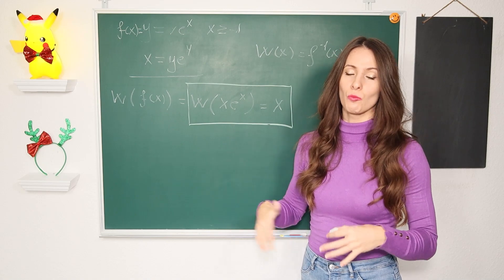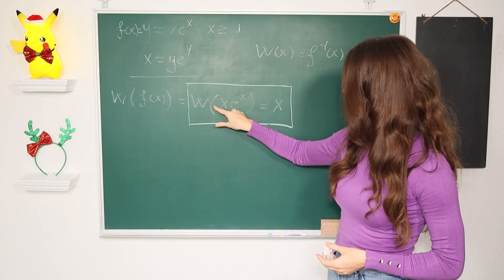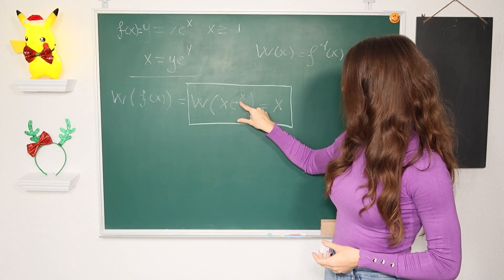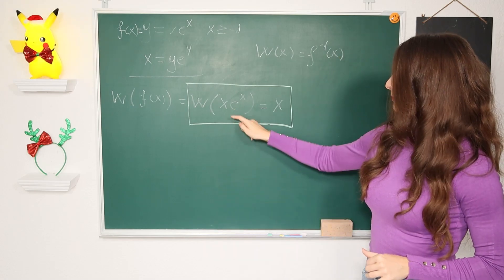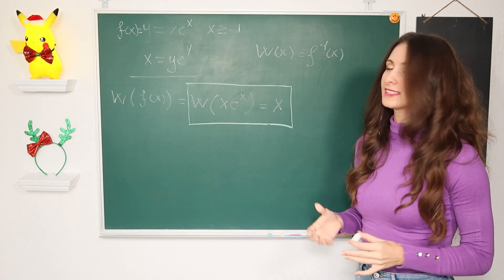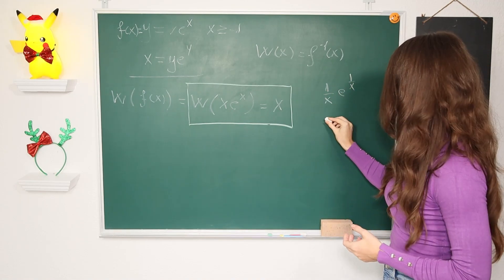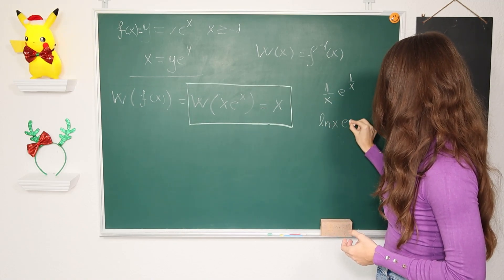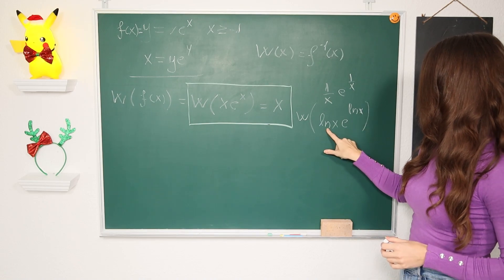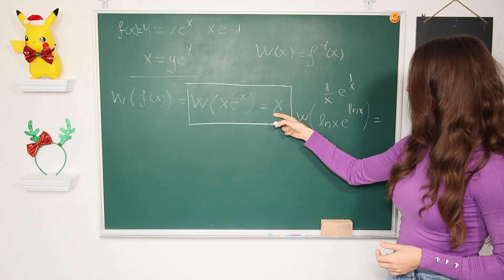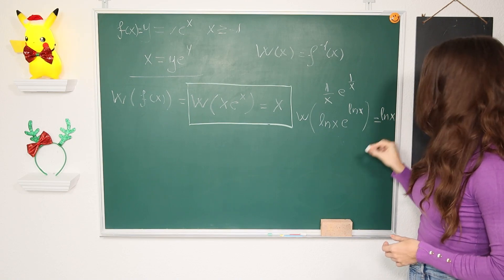This allows us to solve many types of problems where you have the variable both in the base and in the exponent. You need the same variable in both places, and the base must be e. For example, W(x·e^x) = x. It doesn't have to be just x — you could have 1/x · e^(1/x), or ln(x) · e^(ln x), and W(ln(x) · e^(ln x)) = ln(x).